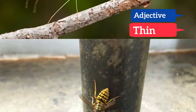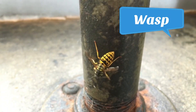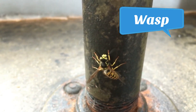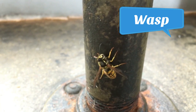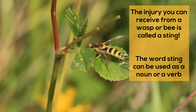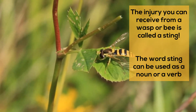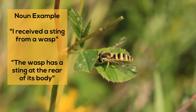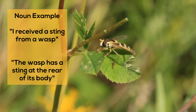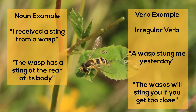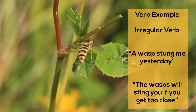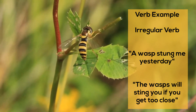Our next insect is known for being quite aggressive — the wasp. When they get aggressive you might get injured. The injury you can receive from a wasp or a bee is called a sting. The word 'sting' can be used as a noun or a verb. A noun example: 'I received a sting from a wasp,' or 'The wasp has a sting at the rear of its body.' An example of this irregular verb in a sentence: 'A wasp stung me yesterday,' or 'The wasps will sting you if you get too close.'